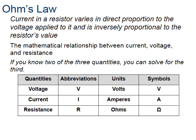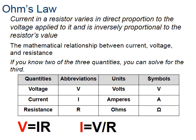So how do we put that together in some sort of relationship? Ohm's law is expressed as: current in a resistor varies in direct proportion to the voltage applied, and is inversely proportional to the resistor value. Ohm's law is written as V equals IR, or equivalently I equals V over R. If I keep the resistance constant and increase the voltage, my current goes up — they're in direct relationship.